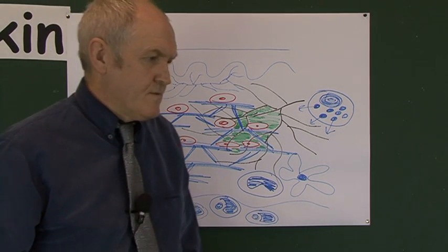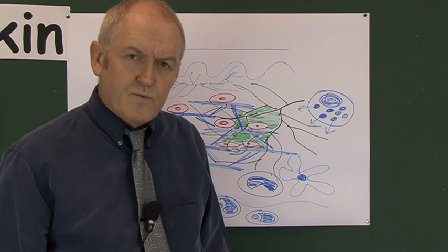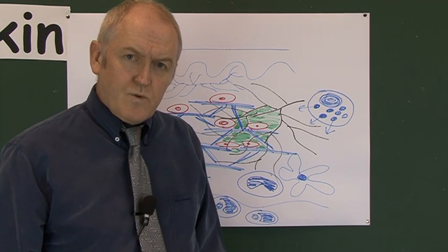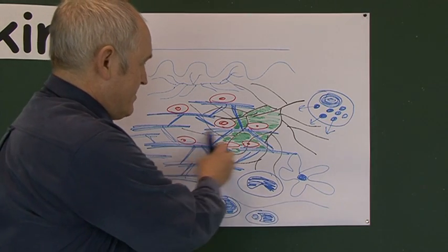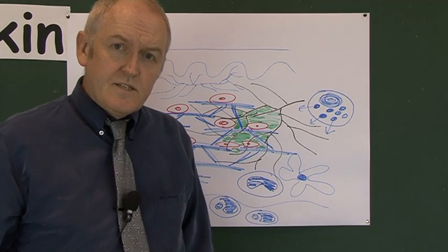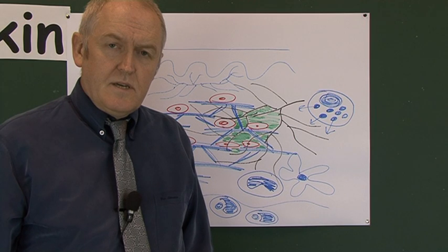Well, next we're going to look at some of the specialized structures within the dermis. And the first one I want to look at, now we've considered the moderately dense nature of the connective tissue, is the nervous innervation in the dermis.